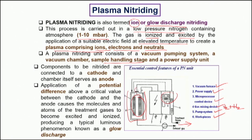We have the cathode and we have the anode. The cathode is connected to the workpieces. A definite electric potential difference is required to create the plasma; the gases get excited and ionized, and in the process we get a luminous discharge which is also called the glow discharge.